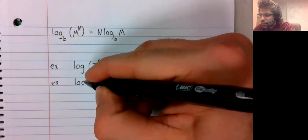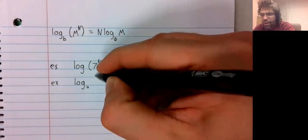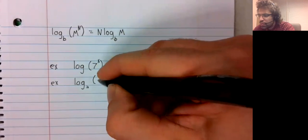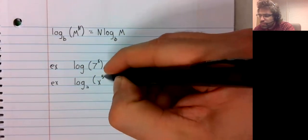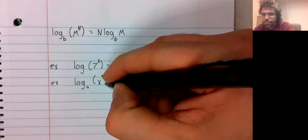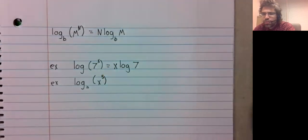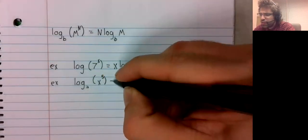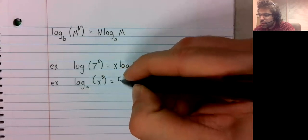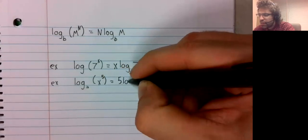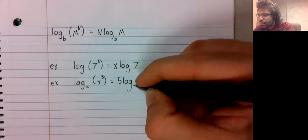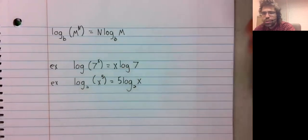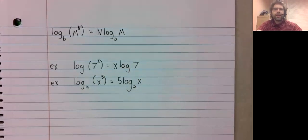Or the logarithm base two of x to the fifth is five times the logarithm base two of x.